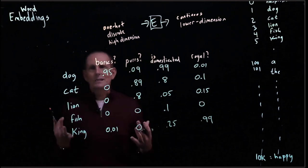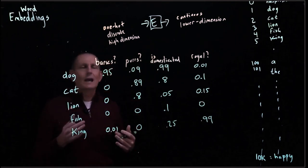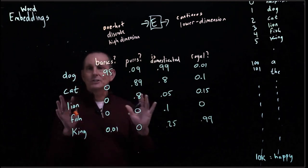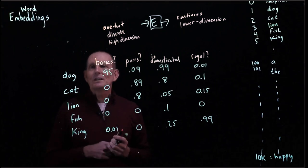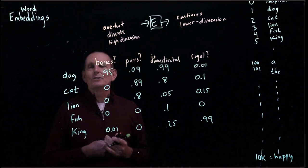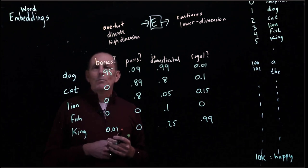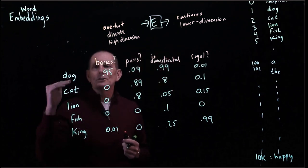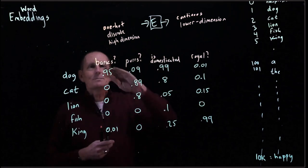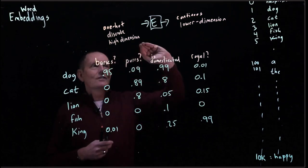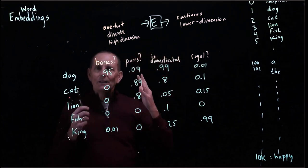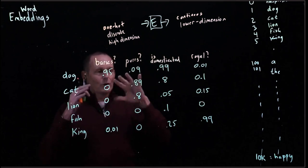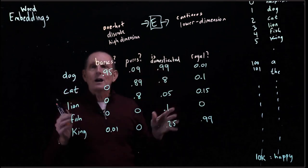So this is conceptually what an embedding is doing. And I have not yet described how it's learning to do all this. But it is learning, through the magic of neural networks, both what columns would be useful and what values each word would have. So it's making up each of these columns to be something that is useful for knowing about words.